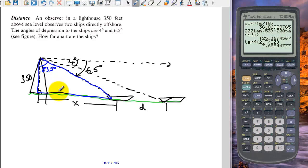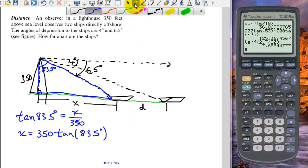x is opposite and 350 is adjacent. So tangent of 83.5 degrees is x over 350. And we solve that for x. We get 350 times the tangent of 83.5 degrees. And now we can do the bigger triangle.